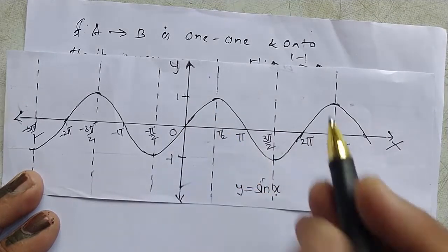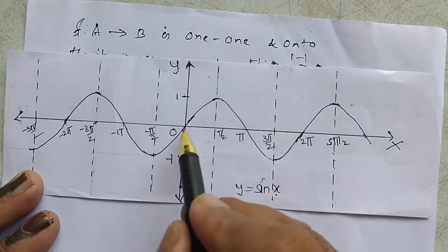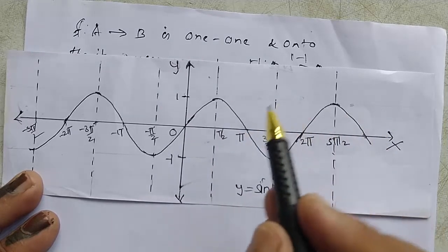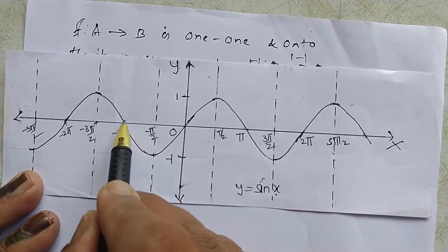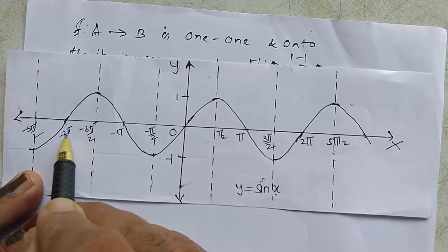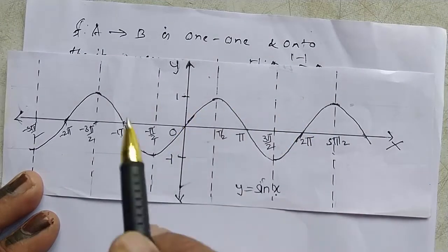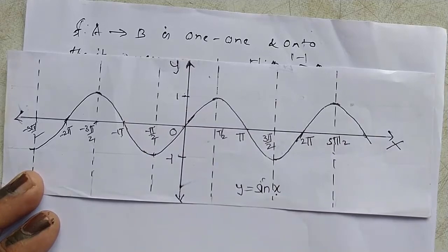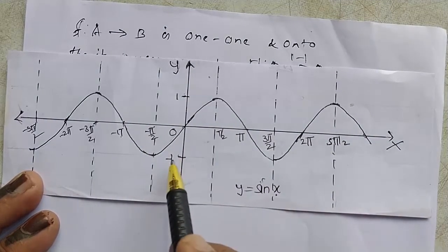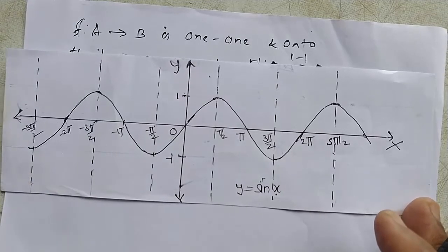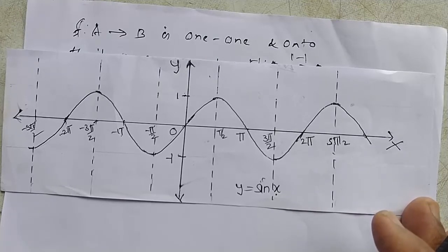For example, when x = 0, y = 0. When x = π, y = 0. When x = 2π, y = 0. Similarly, for x = -π and x = -2π, y = 0. Therefore, for many values of x we get the same value of y, so the sine function is not one-one on its domain. In order to make the sine function one-one and onto, we restrict the domain so that it becomes one-one and onto.